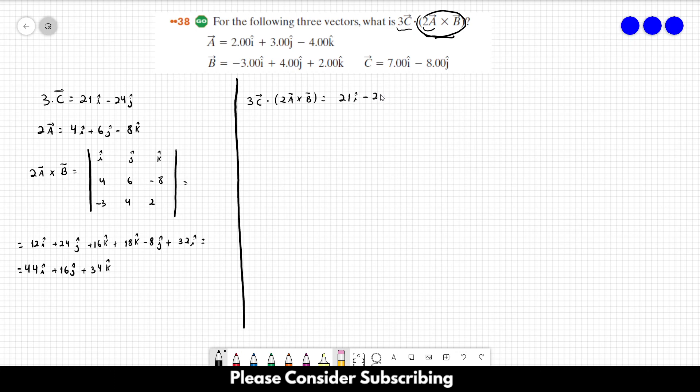21 I minus 24 J dot product with 44 I plus 16 J plus 34 K. So all you have to do is multiply the components and then sum everything up.